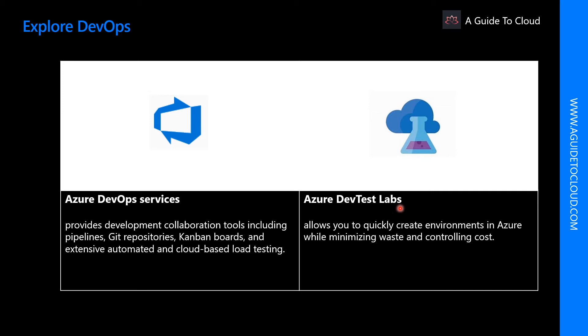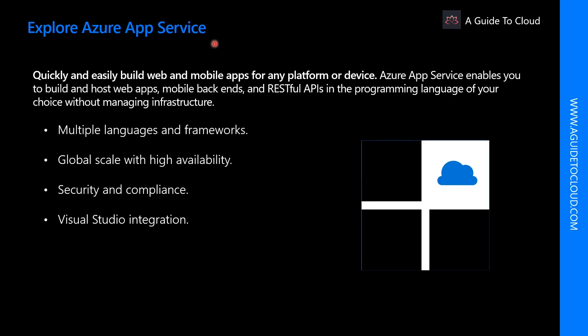Lab Services were formerly known as DevOps Test. Now let's explore Azure App Service. With Azure App Service you can quickly and easily build web and mobile apps for any platform or any device. Azure App Service enables you to build and host web apps, mobile backends, and RESTful APIs in a programming language of your choice without managing infrastructure. It offers auto scaling and high availability, supports both Windows and Linux, and enables automated deployment from GitHub, Azure DevOps, or any other Git repository.